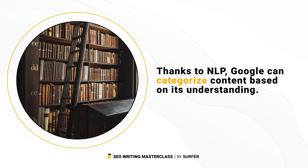Next, we have categories. Thanks to NLP, Google can categorize content based on its understanding. For example: internet and telecom, or mobile and wireless. So Samsung would fall into that category, but unfortunately vegan cookies would not. I really love vegan cookies.